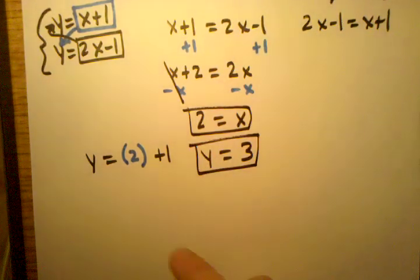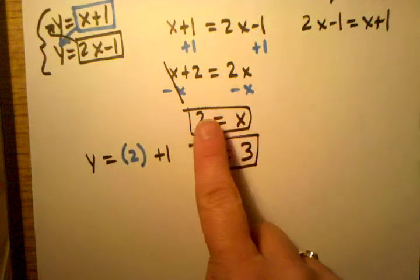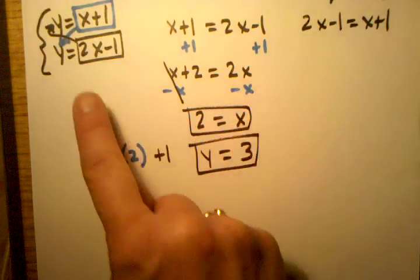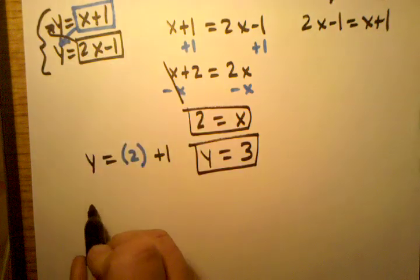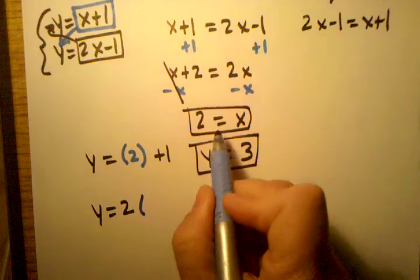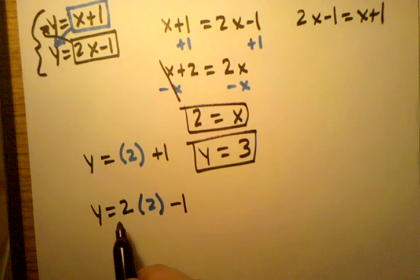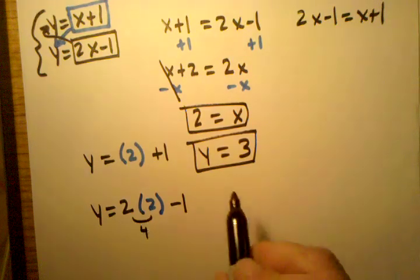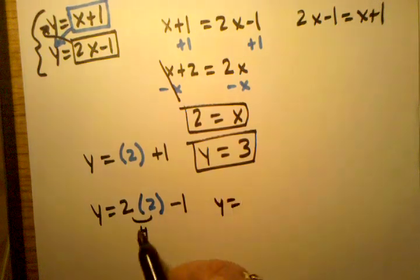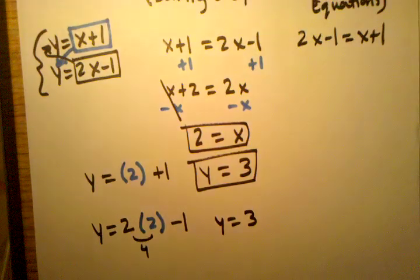Now just to show you that it doesn't really matter which equation I use to plug this x in, I'm going to do it with the other equation now. So let's do it for y equals 2 times, what is x? x is 2 minus 1. If I solve for that, here I get 4, and I end up with y equals 4 minus 1, which is 3. I get the same answer again. That's just to show you that it really does work.